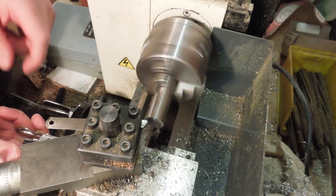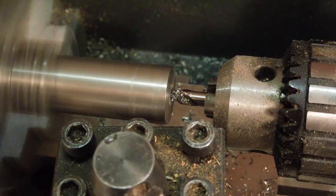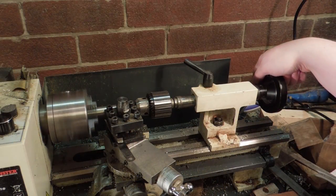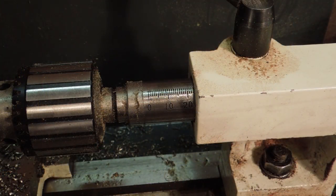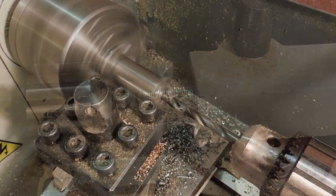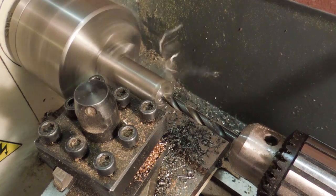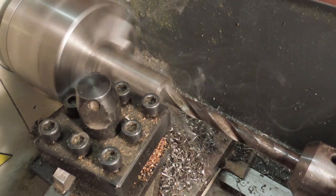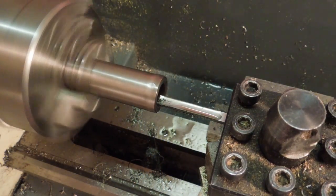A piece of 20mm bar was faced and center drilled, then step drilled close to 13mm. I'm using the graduations on the tailstock ram to judge the depth. Then it was bored to 13mm diameter.